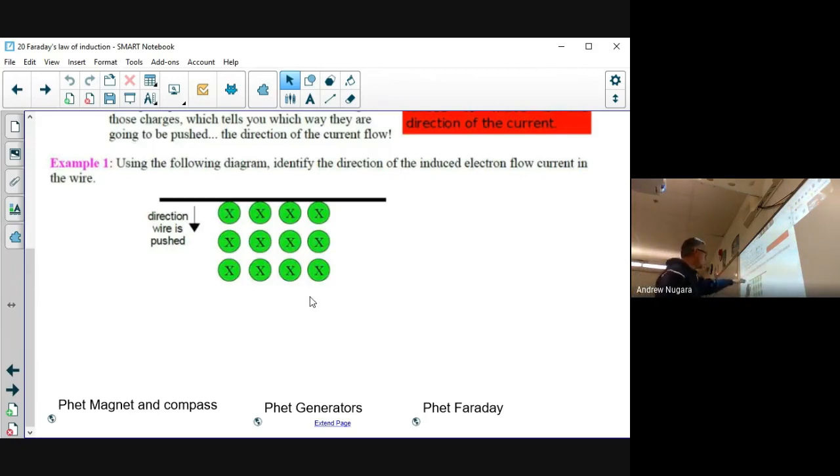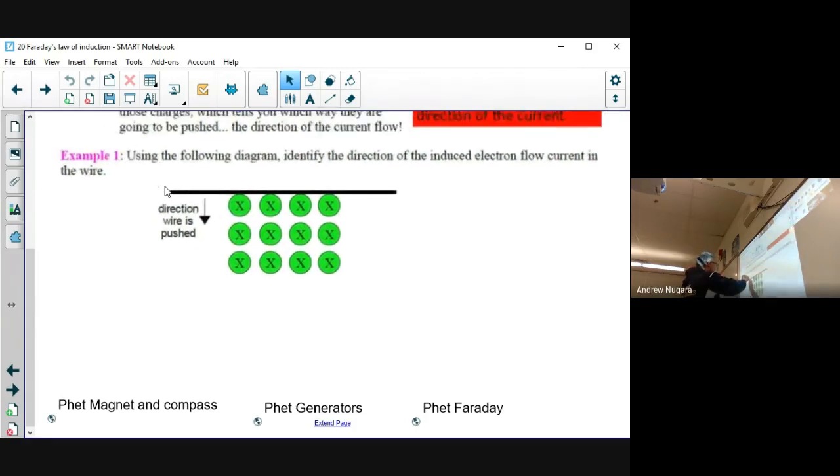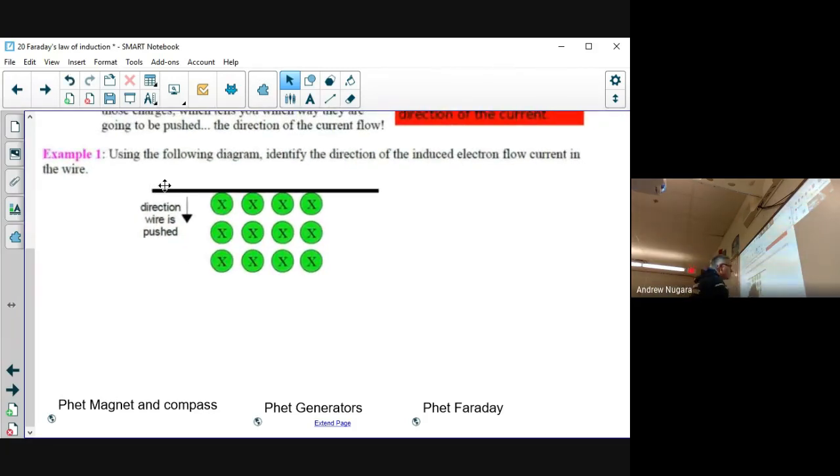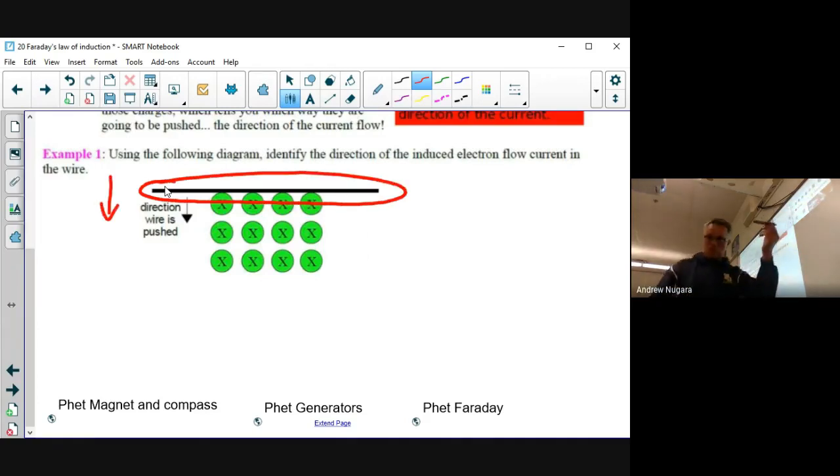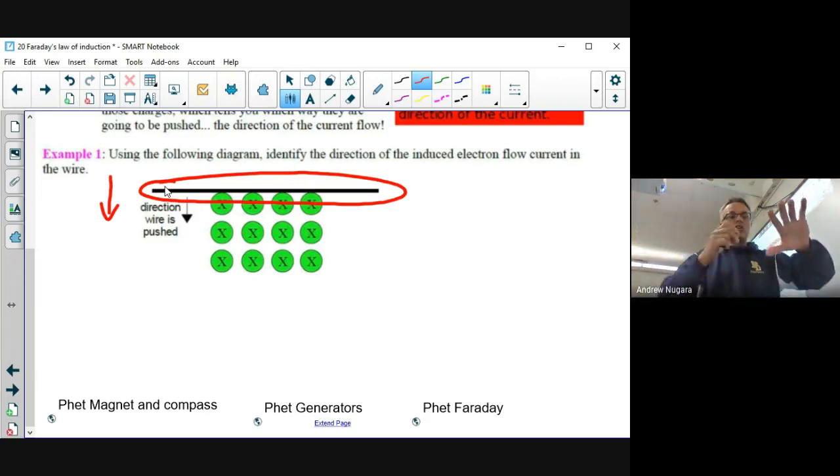Using the following example, identify the direction of the induced electron flow current in this wire. So you're taking—here's the wire. Here's the wire and you're just moving it down. You're just taking a wire and you're just moving it down, and then you're moving it into the magnetic field. The magnetic field is into the board.